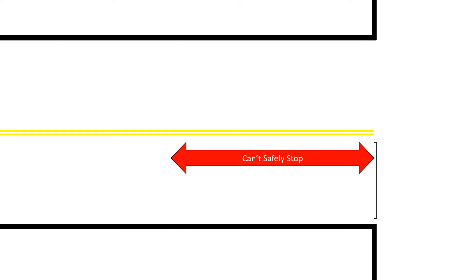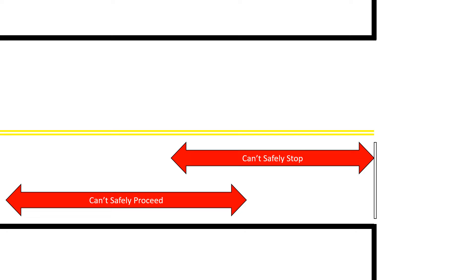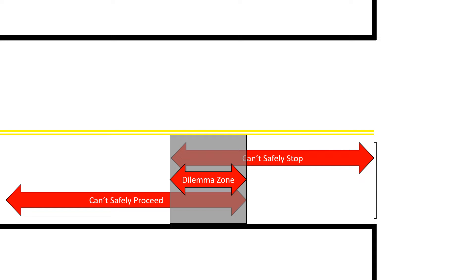Let's look at a scenario where we actually would create a dilemma zone. We've got the area where you can't safely stop — if you're too close to the stop bar and the signal turns yellow, you can't safely stop and you need to proceed through. But if that overlaps with an area where you can't safely proceed, then you create a dilemma zone. In that area, a vehicle both cannot safely stop and cannot safely proceed, meaning they'll be going through the intersection on red. We obviously do not want to design a signal that creates this dilemma zone.